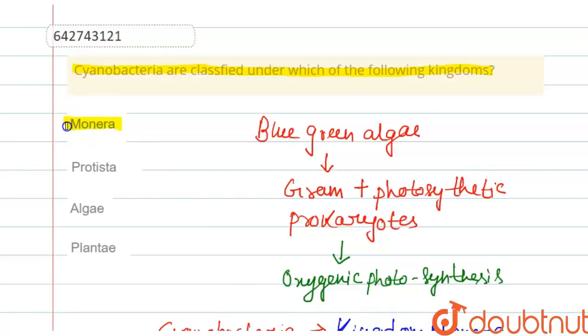So the correct option will be the first one, that is Monera, as in this kingdom only the prokaryotic cyanobacteria are classified.